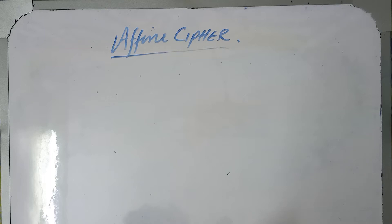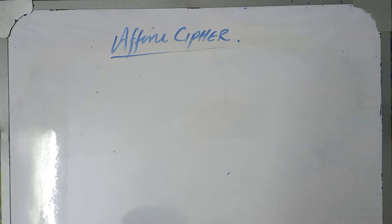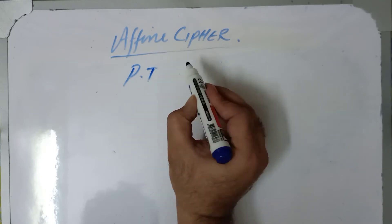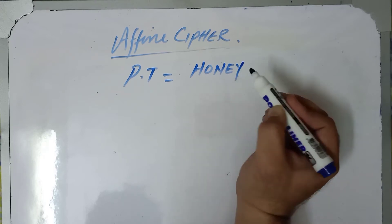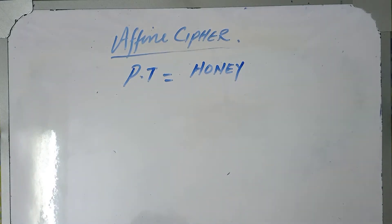Today we will shed some light on the affine cipher. Previously we took an example, encrypted it, and then decrypted it to see how an affine cipher works. In this example we will take a different text — our plain text is 'honey' — and we will convert this into cipher text using an affine cipher.